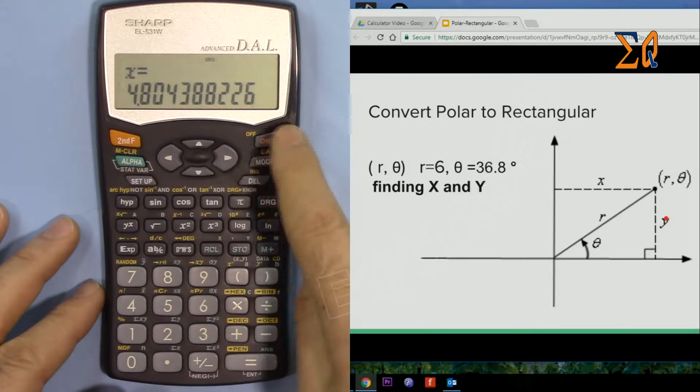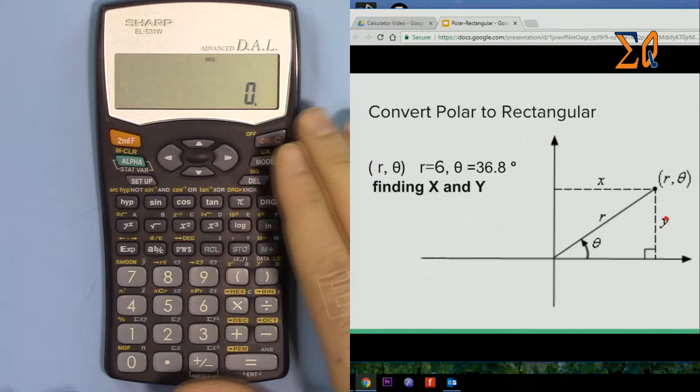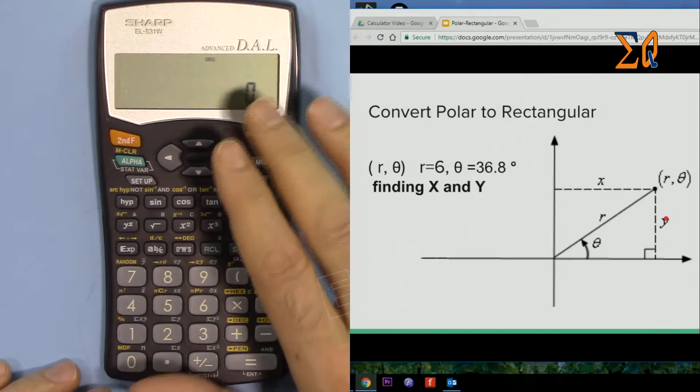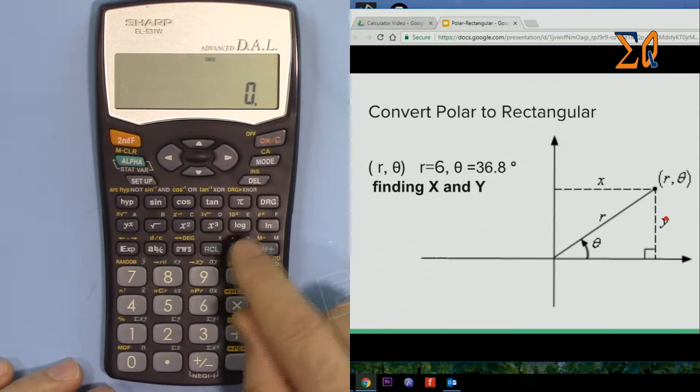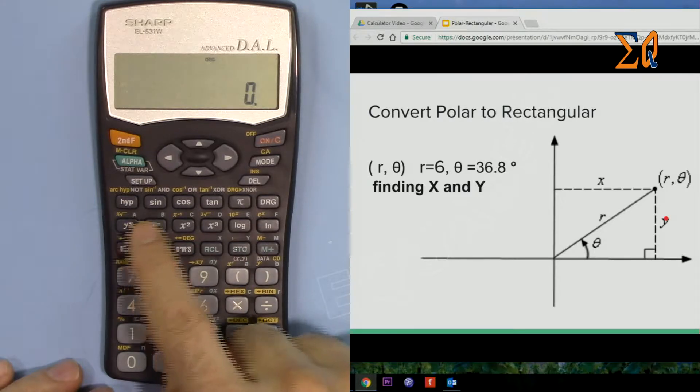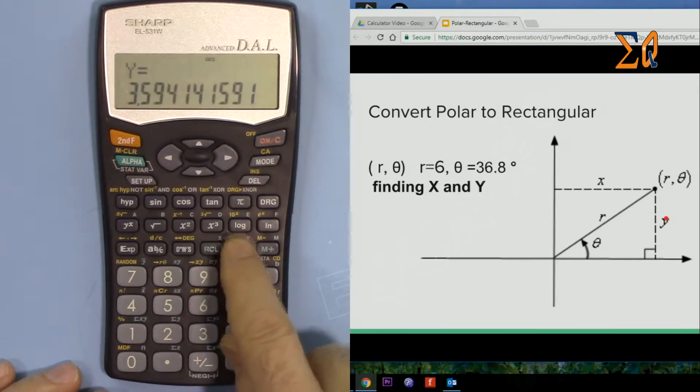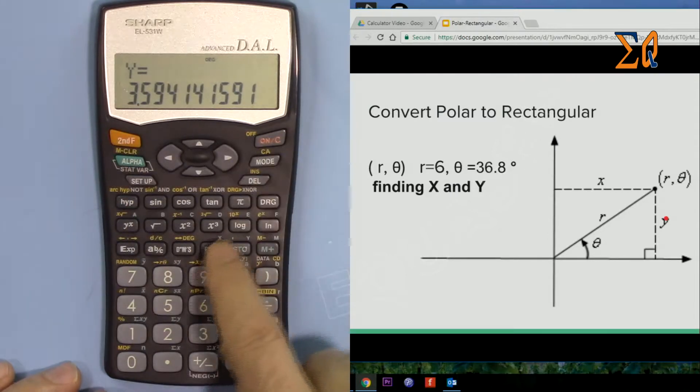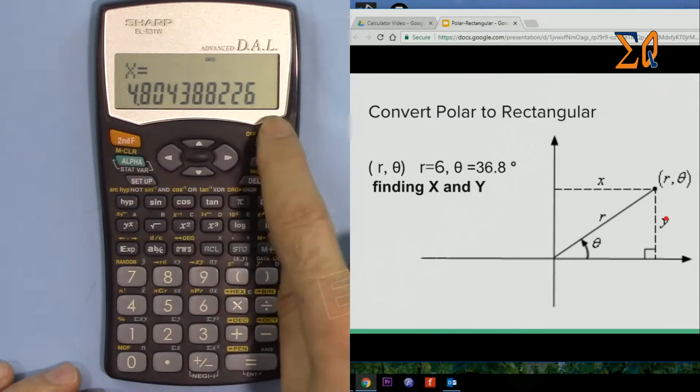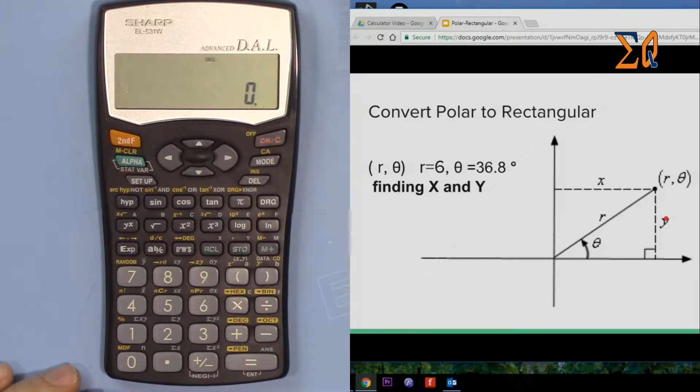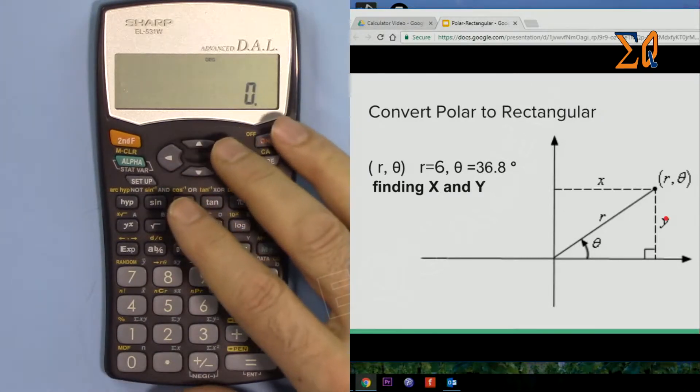But even if you press clear, until you do the next calculation of the same type, X and Y are already in the memory. So press recall Y and it will give you the Y. Recall and then X will give you the X. The same will apply for r and theta.